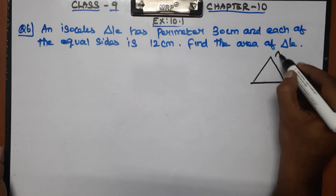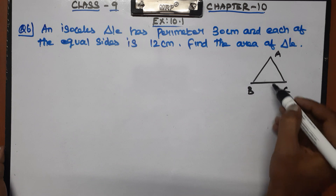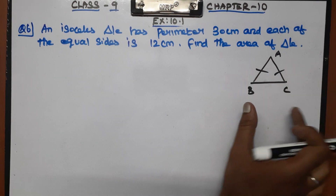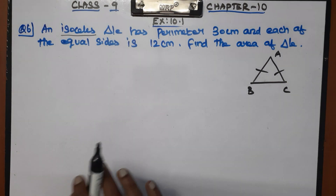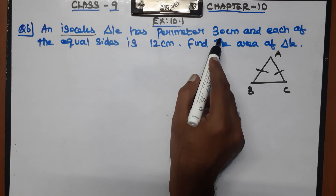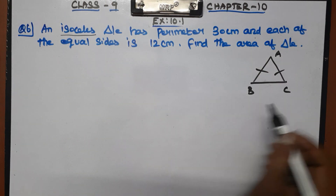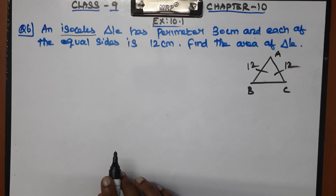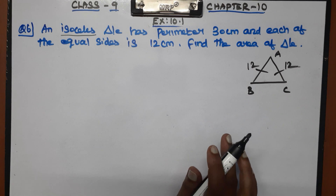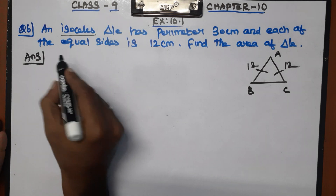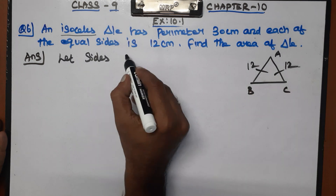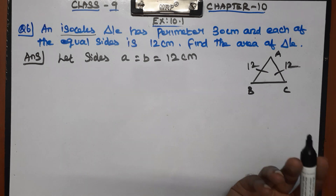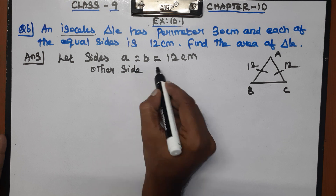Looking at the triangle with sides a, b, and c — since it is isosceles, sides a and b are equal, so a = b = 12 cm. The third side is c. Using the perimeter formula: a + b + c = 30 cm, so 12 + 12 + c = 30.